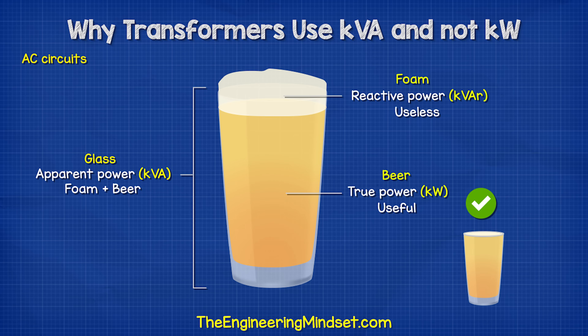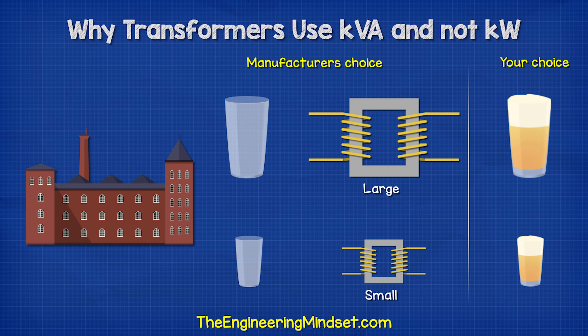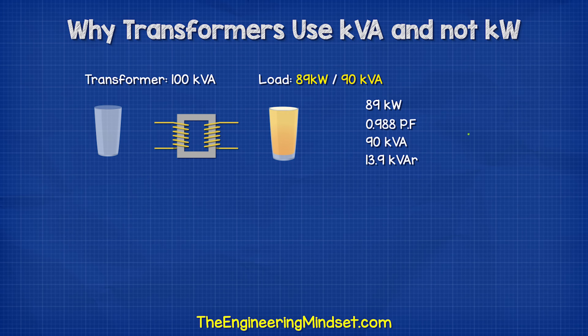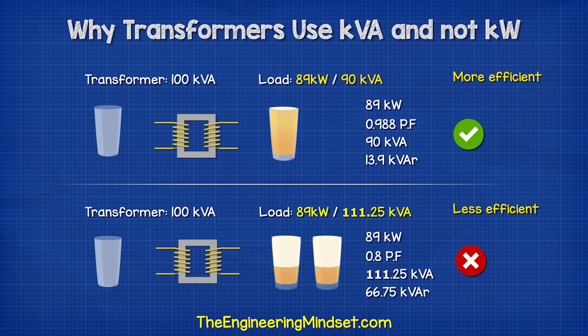Now, if you have a good bartender, you will get a little foam and lots of beer for your money. But if you have a bad bartender, you're going to get lots of foam and not so much beer. The transformer manufacturer is basically saying this transformer can handle a glass this big, but it's up to you how much beer and foam you put into it. The less foam you pass through, the more beer you can get out. So the more efficient the device is that you connect, the more things you can power.